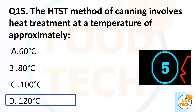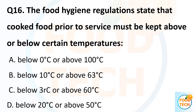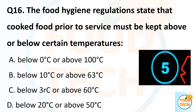Question 16. The food hygiene regulations state that cooked food prior to service must be kept above or below certain temperatures. A. Below 0°C or above 100°C. B. Below 10°C or above 63°C. C. Below 3°C or above 16°C. D. Below 20°C or above 15°C.